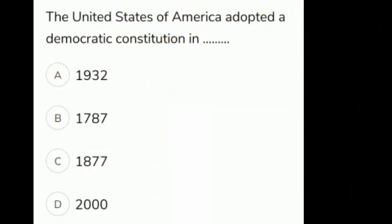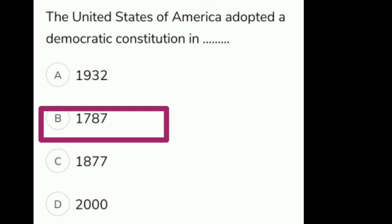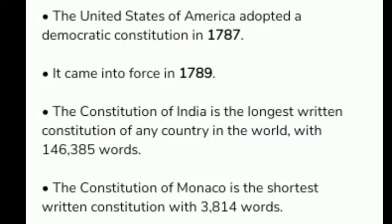The United States of America adopted a democratic constitution in which year? The given options are A 1932, B 1787, C 1877, D 2000. The correct answer is option B, 1787. The United States of America adopted a democratic constitution in 1787. It came into force in 1789.